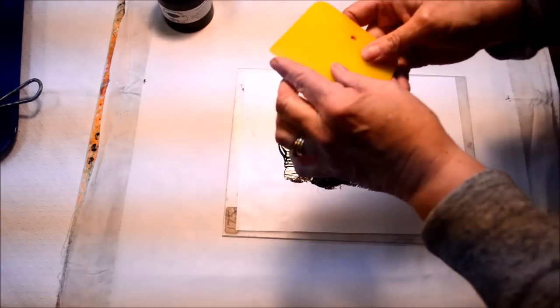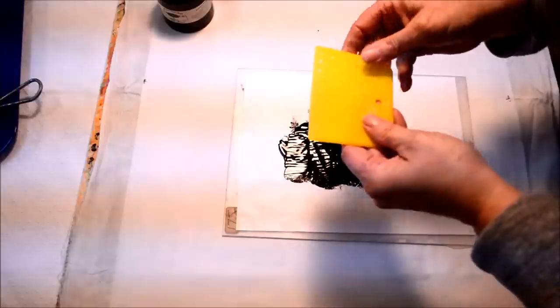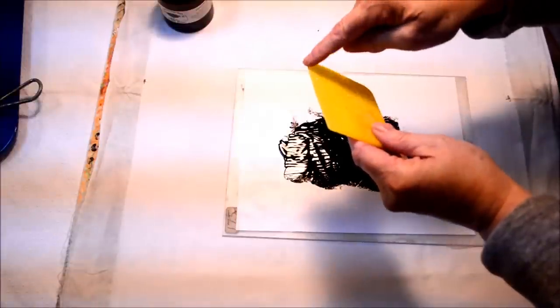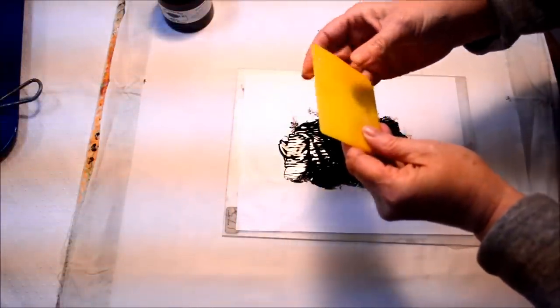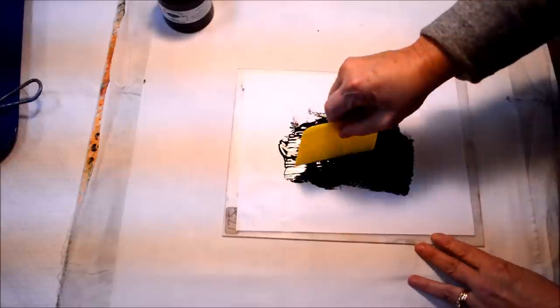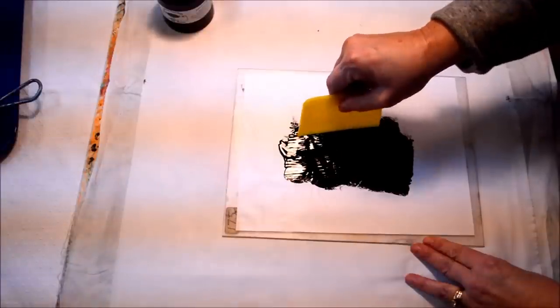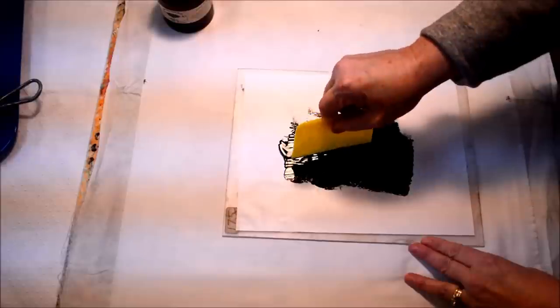This firm edge here, it could be something like this scraper, it could be a credit card, anything with a fairly straight, firm edge, but with something with a little bit of flexibility. I'm going to show three different marks that you can do. You could use other colors, you could use different fabric, the choice is up to you.